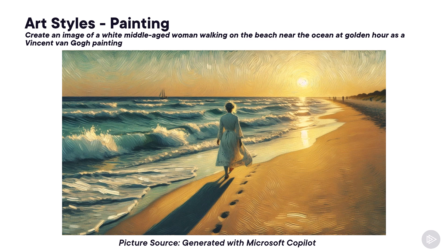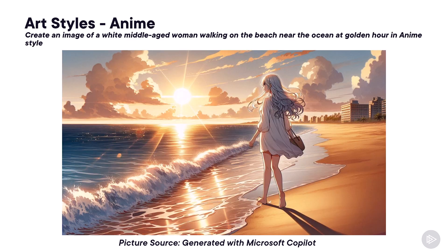I can also ask the same thing but as a painting — actually, more specifically, as a Vincent van Gogh painting. So you can tell Copilot not only that you want it as a painting, but give it the style of a painter that you like, or specify that you want it as a watercolor painting or as an oil painting. We could also ask Copilot for the same image but in the anime style, which will give you something similar to this image.